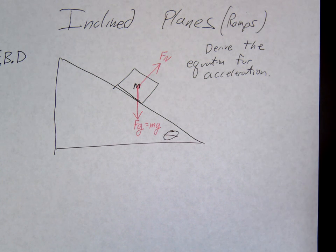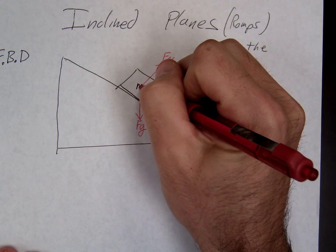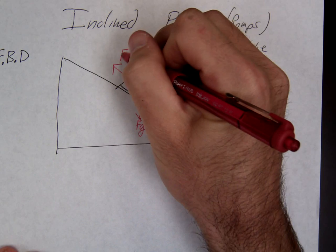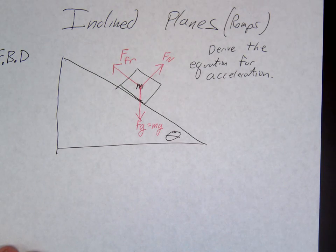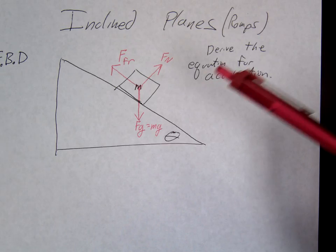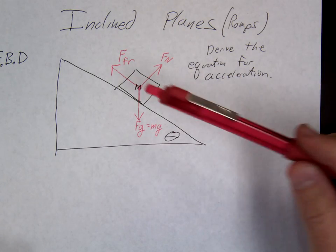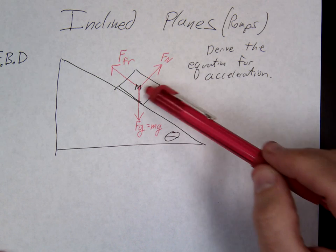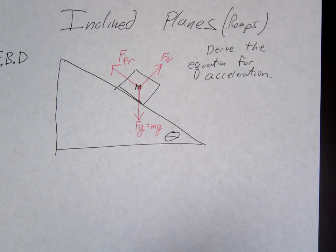Anything else? Friction. Now what direction is friction? So friction would be this way. So if the object's sliding down the ramp as I've posed to you, then friction would be opposite of the motion. It's always opposite of the motion. If the motion's this way, it'd be this way.